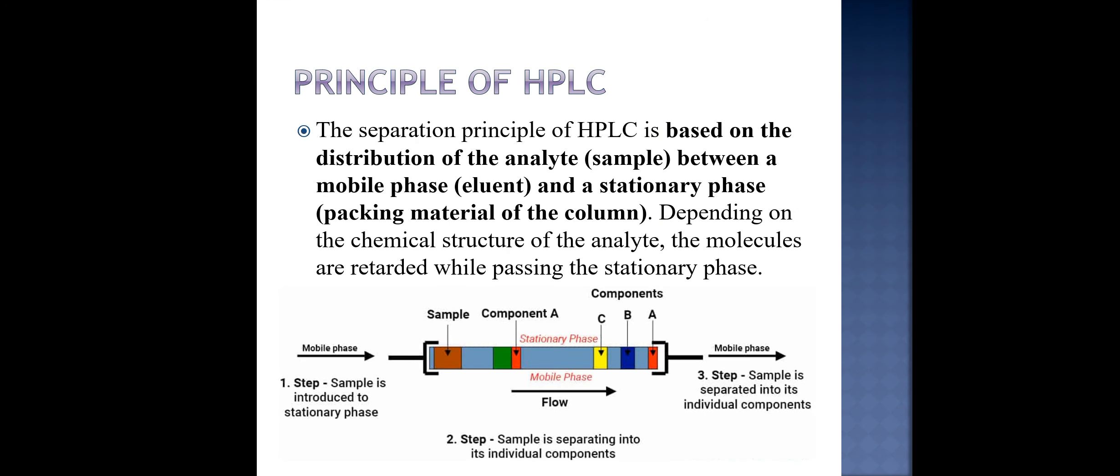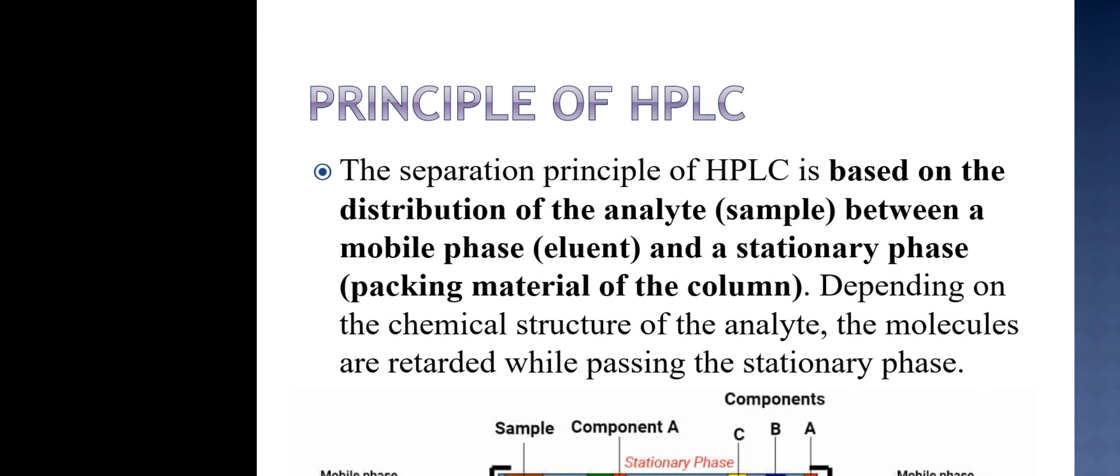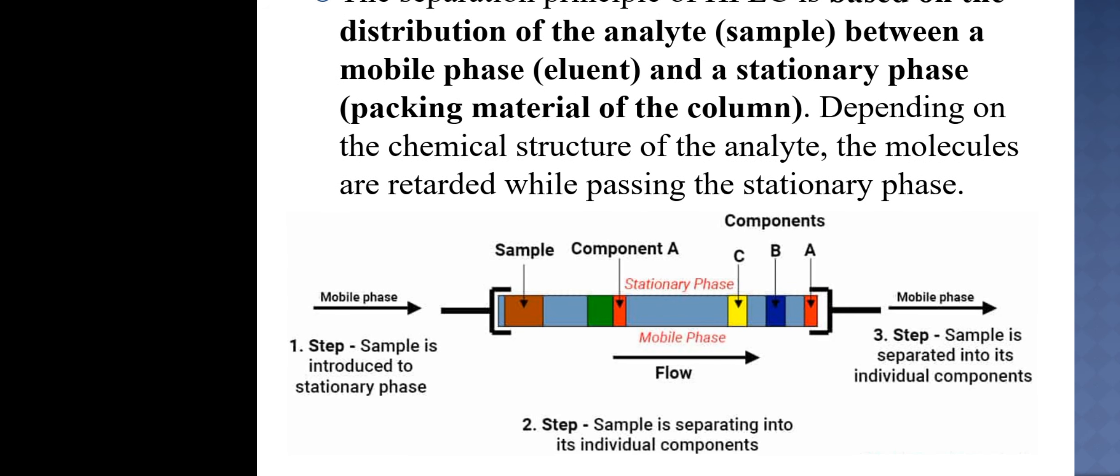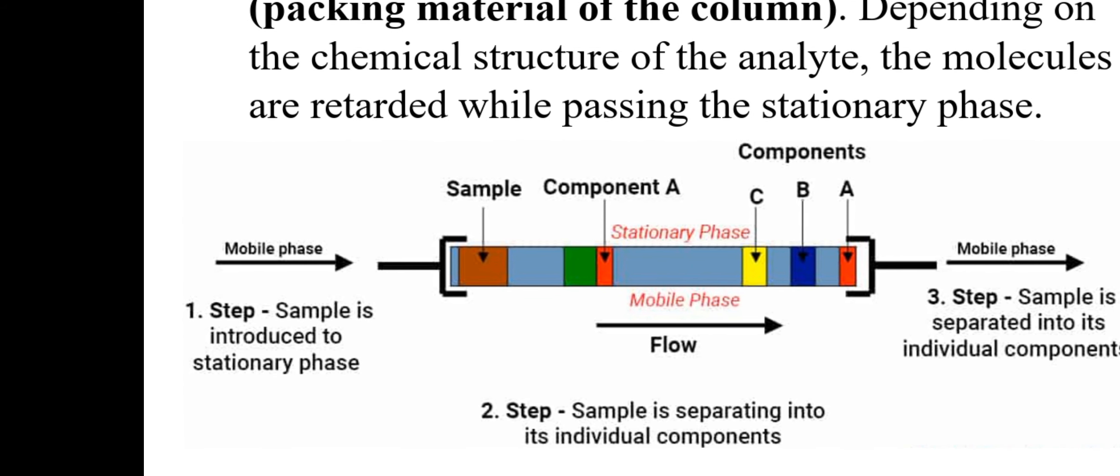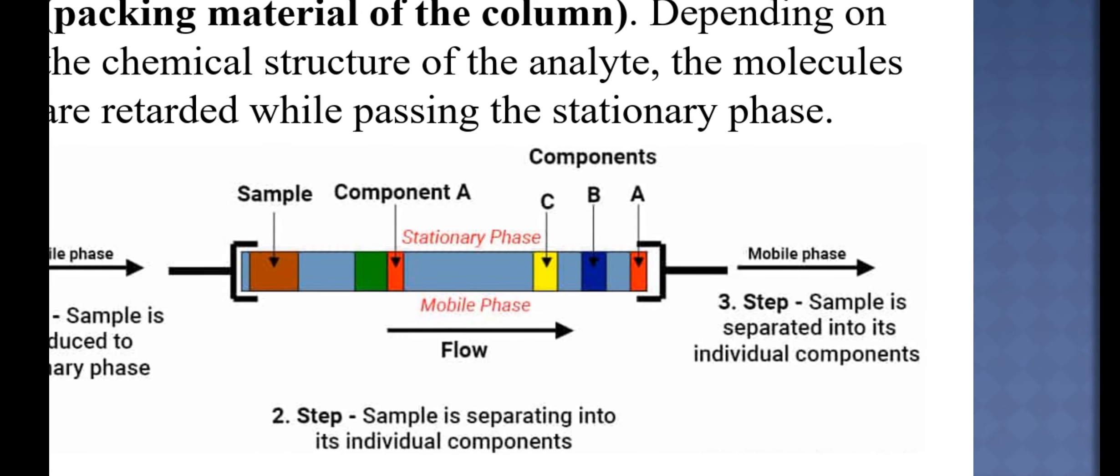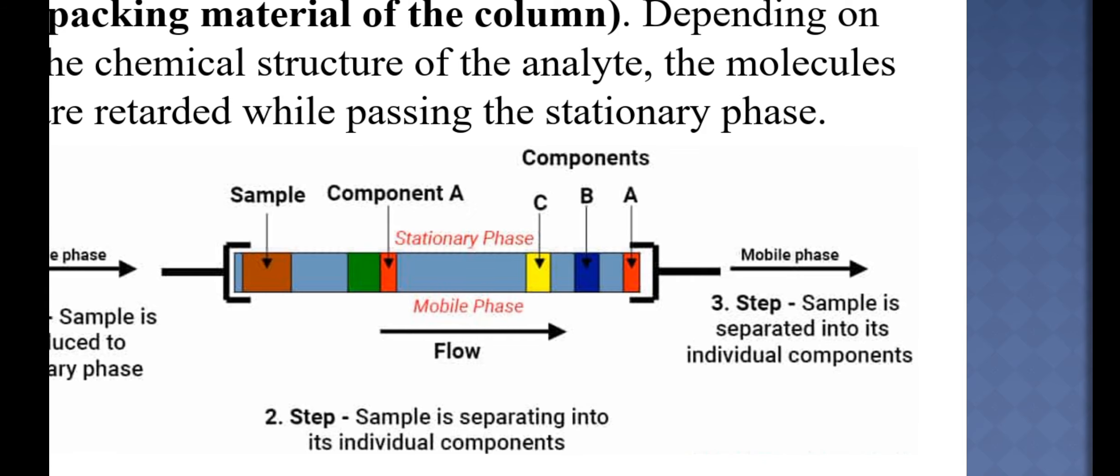Let's discuss about the principle of HPLC high performance liquid chromatography. The separation principle is based on the distribution of analyte or the sample between a mobile phase eluent and a stationary phase packing material of the column. Depending upon the chemical structure of the analyte the molecules are retarded while passing the stationary phase. Step 1 is sample is introduced into the stationary phase through the column and the sample differentiates into different components. Step 2 is sample is separated into individual components. Step 3 is that sample is separated into its individual components.